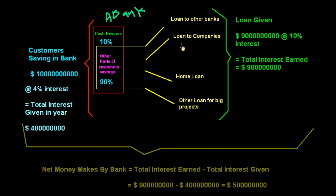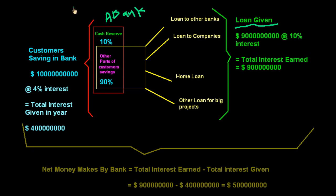The bank can give loans to other banks, loans to companies, home loans, and loans for big projects. Suppose the bank gives out 9 billion in loans, keeping 1 billion as cash reserve.